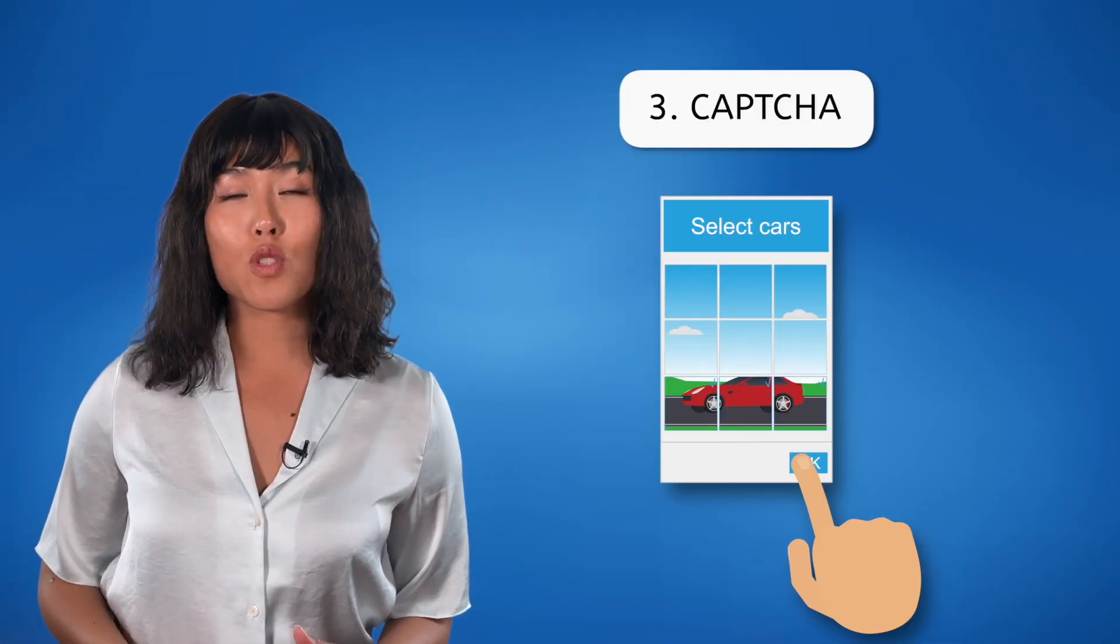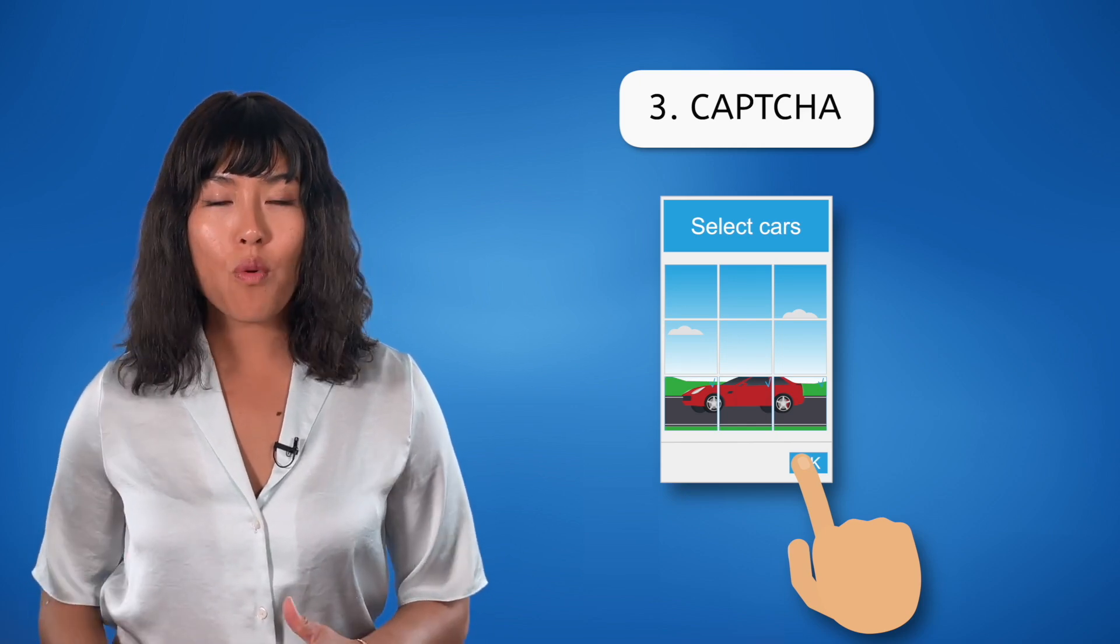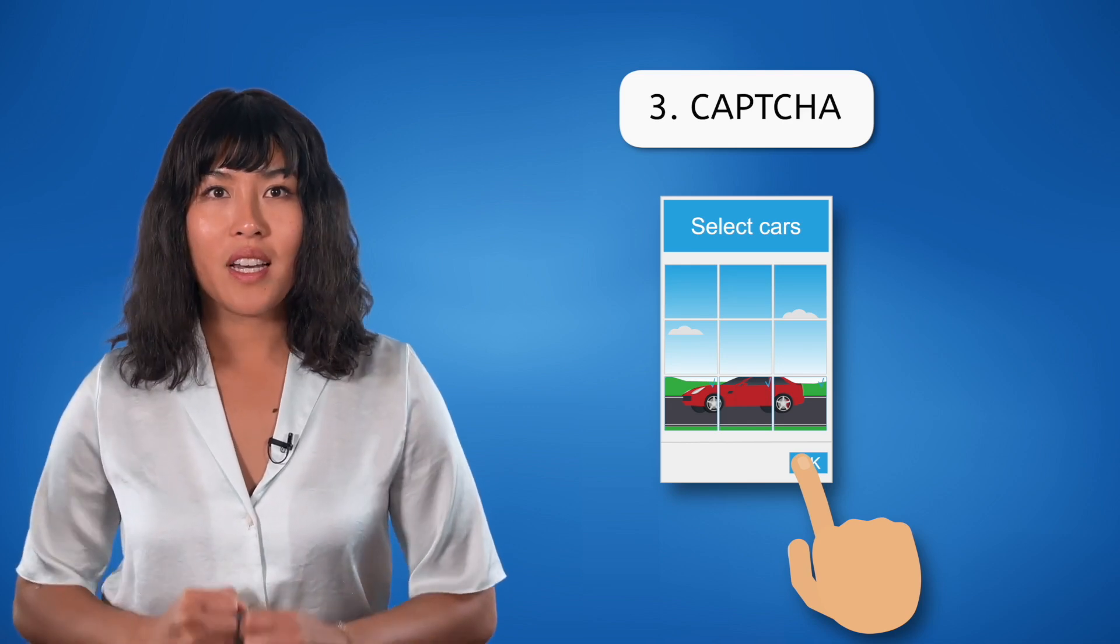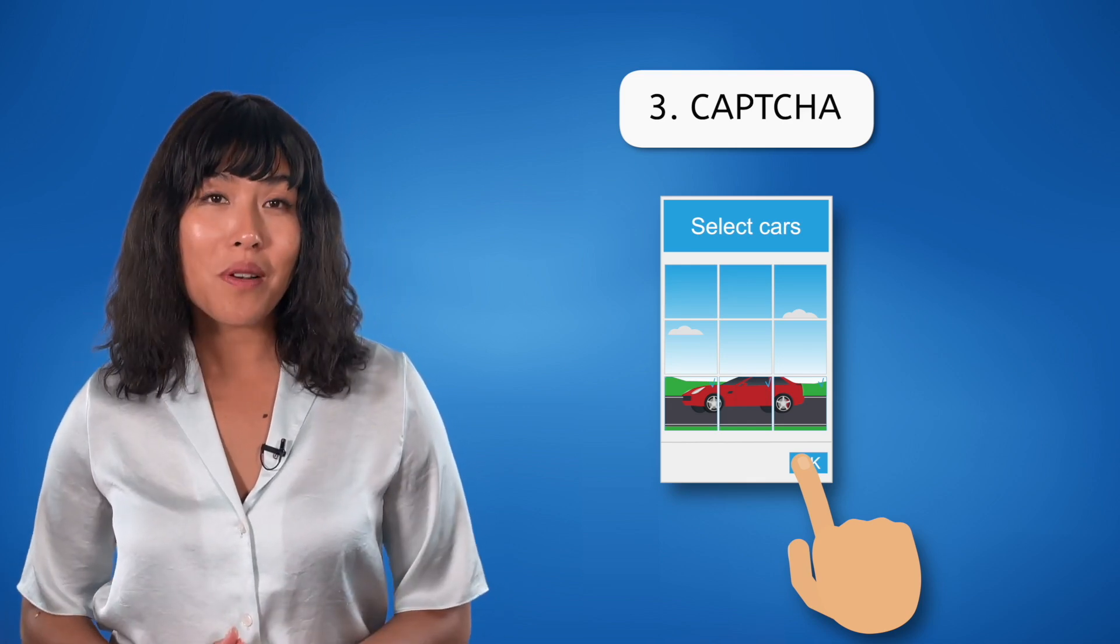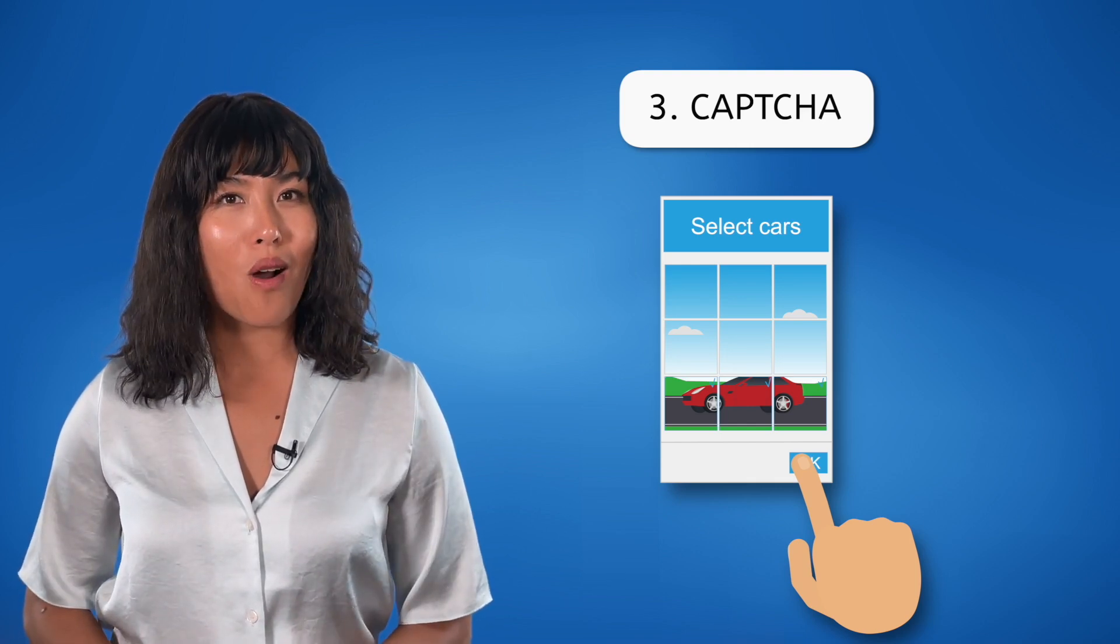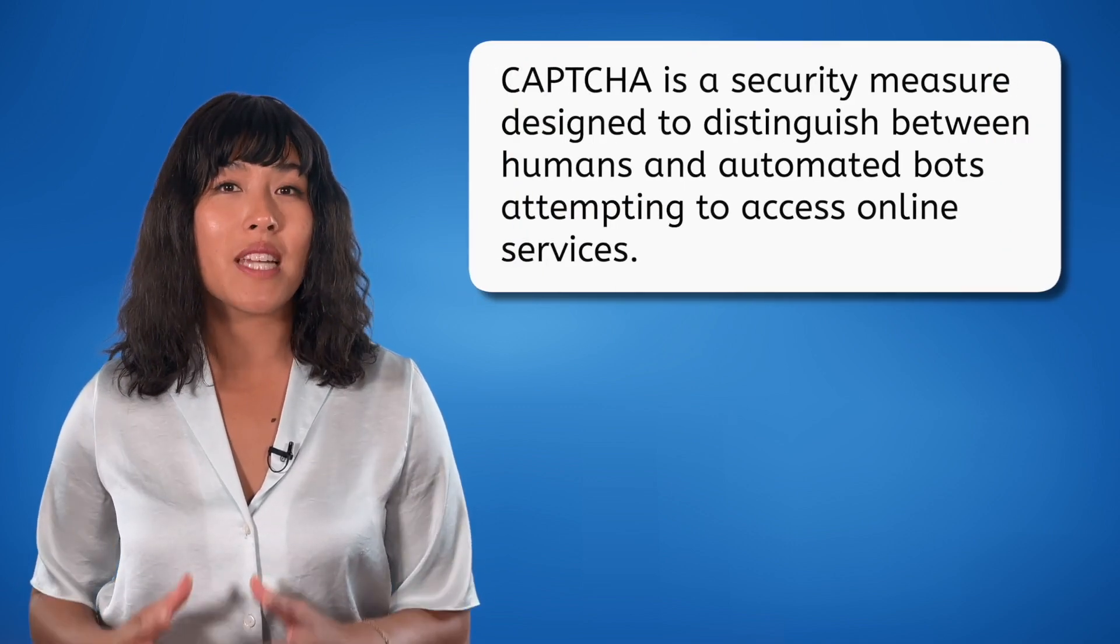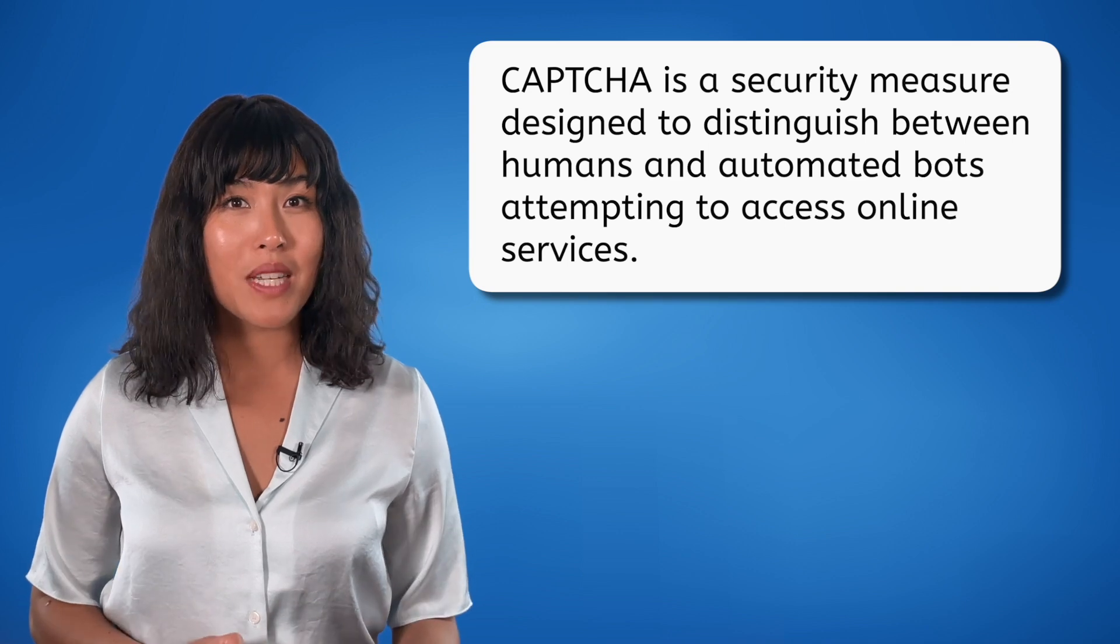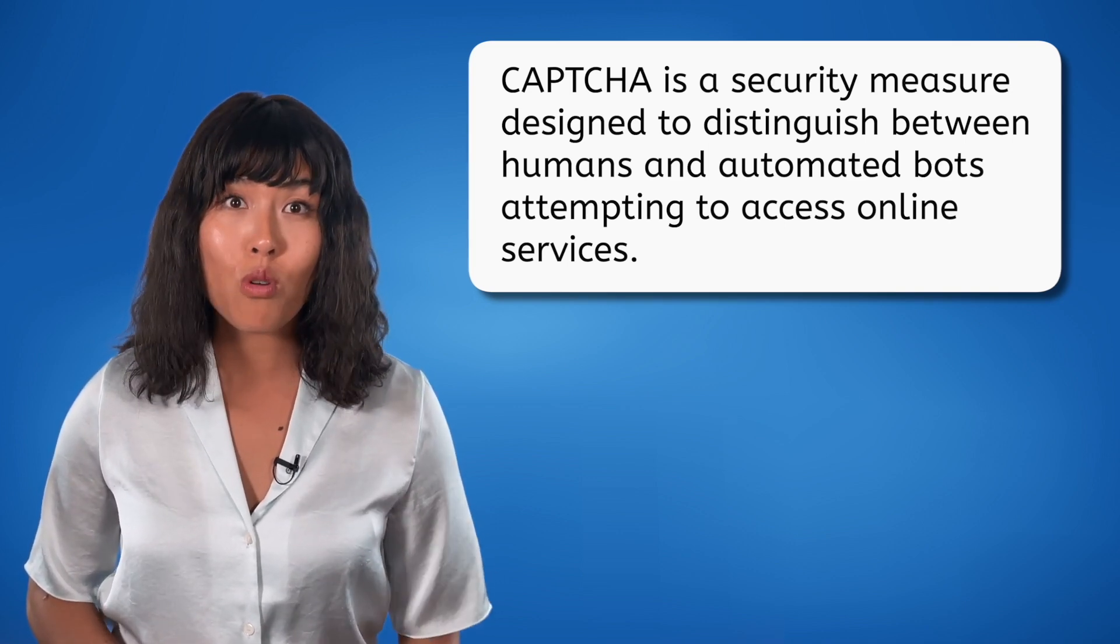Have you ever wondered why sometimes when you log into an online service, you are asked to find all of the crosswalks or click on all of the motorcycles? What you are experiencing is cyber security at work through something called a CAPTCHA. CAPTCHA is a security measure designed to distinguish between humans and automated bots attempting to access online services using the brute force technique.